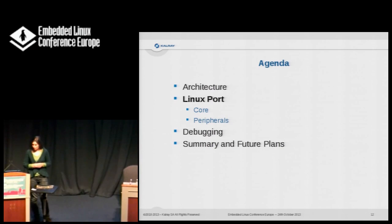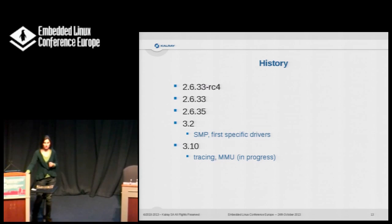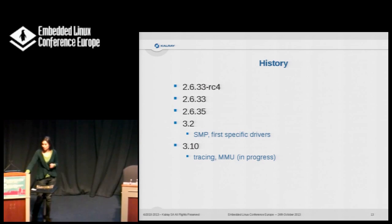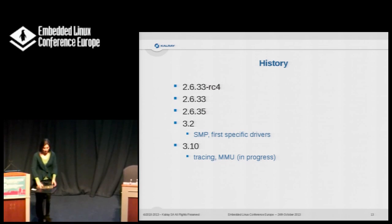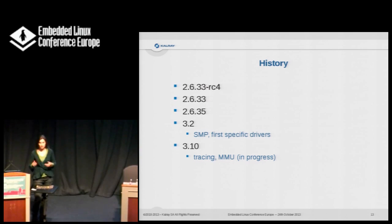Now let's move to the Linux port. Here I've put the kernel versions we have used. It's a pretty recent port. It started at 2.6.42/43. Then we moved quite rapidly to 2.6.45, and then 3.2. At 3.2 we added SMP support and the first specific drivers. In fact, the moment we had 3.2 was when the chip came from the fab and we ran for the first time on the real processor.